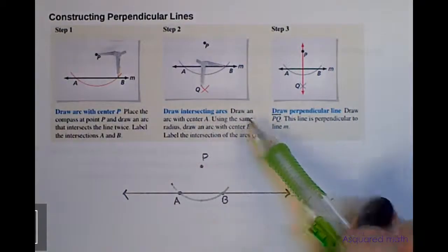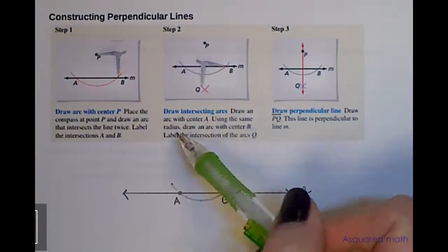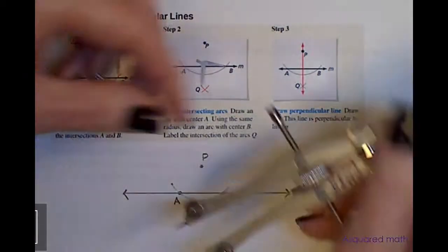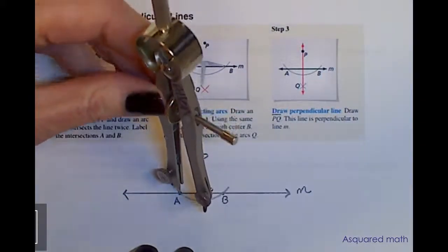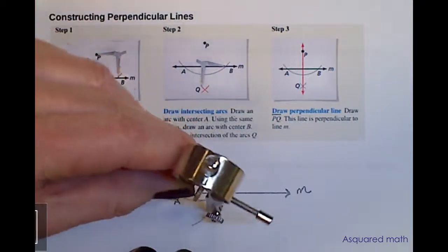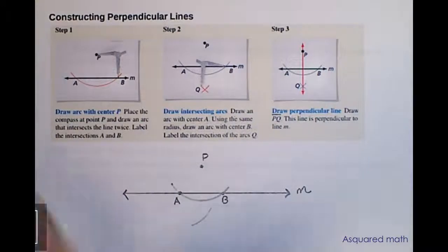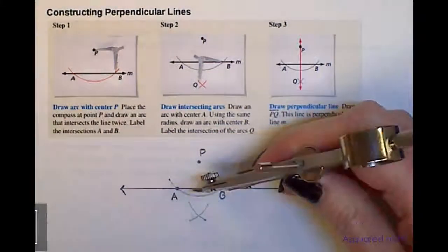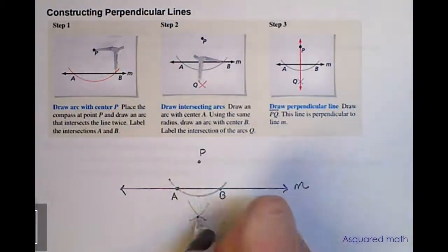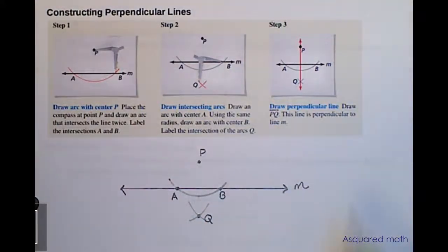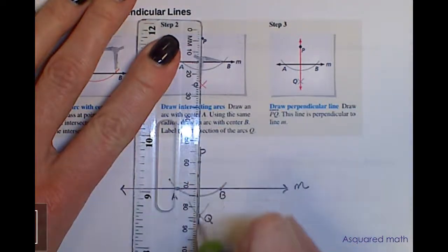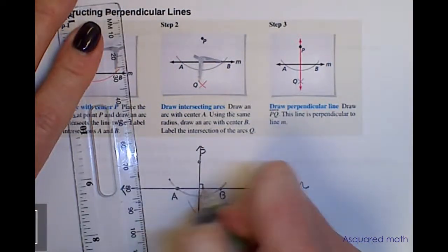Step 2: draw an arc with center A, then using the same radius draw an arc with center B. Label the intersection of the arcs as Q. Without moving the compass radius, put the compass at A and draw an arc down near the center point between A and B, then do the same with center B drawing another arc there. We have an intersection of our two arcs — we call that point Q. Then draw line PQ; this is your perpendicular line to line M. Connect those dots with a straight edge, and this is our perpendicular line to line M.